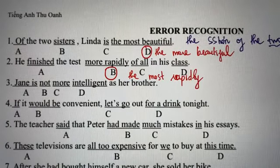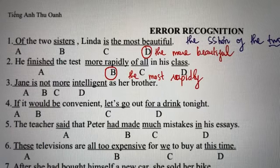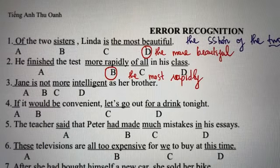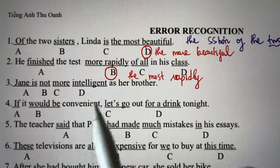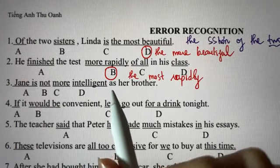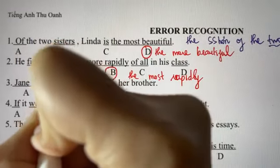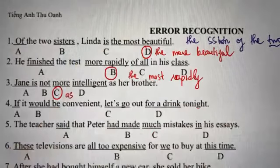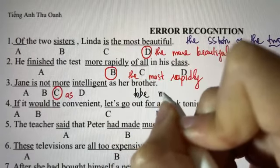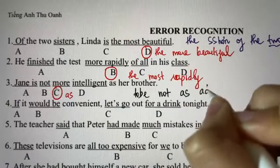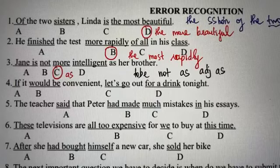Câu số 3: cô ấy không thông minh bằng anh trai của cô ấy. Mọi người chọn đáp án C. Từ 'as' đầu tiên không bị sai, từ thứ hai bị sai. Công thức so sánh không bằng: 'to be + not + as + tính từ + as'. Mọi người sửa lại ở đây là 'as'.